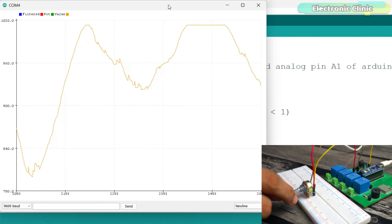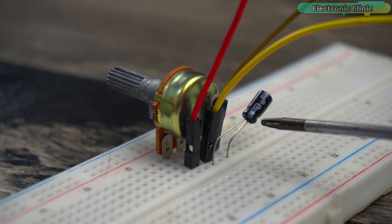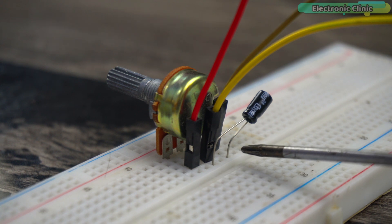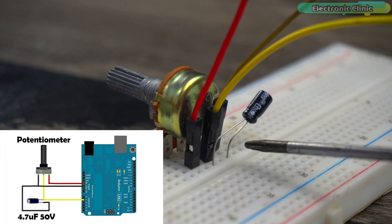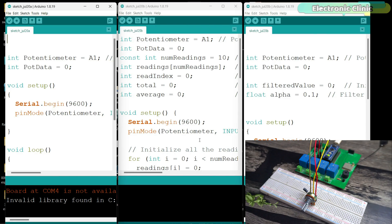So, let's test all three programs with a capacitor. Simply connect the positive leg of a 4.7 or 10uF capacitor to the middle leg of the potentiometer and connect the ground leg of the capacitor to the Arduino ground. This makes a simple low-pass RC filter. Now, let's go ahead and upload all the three programs one by one.